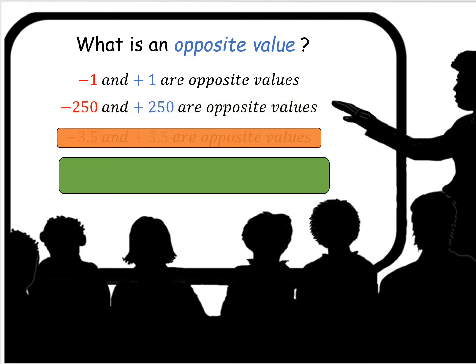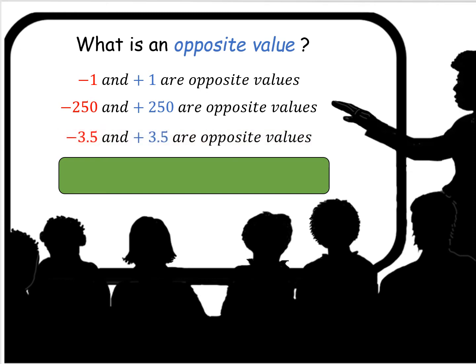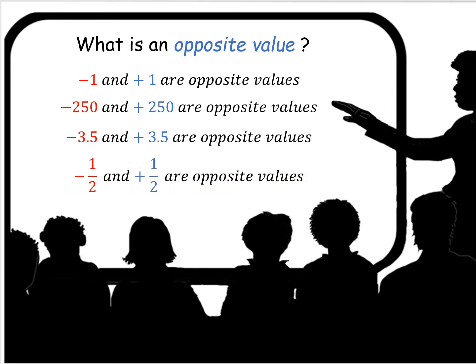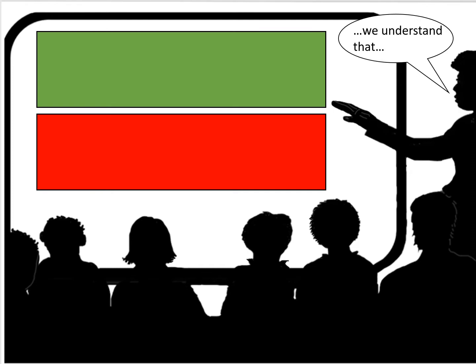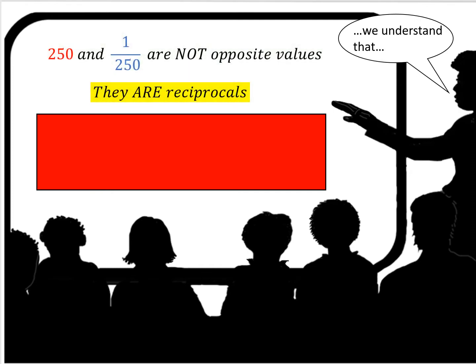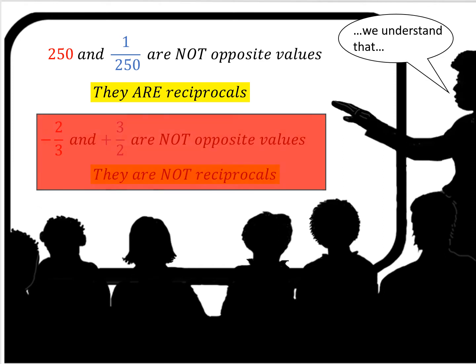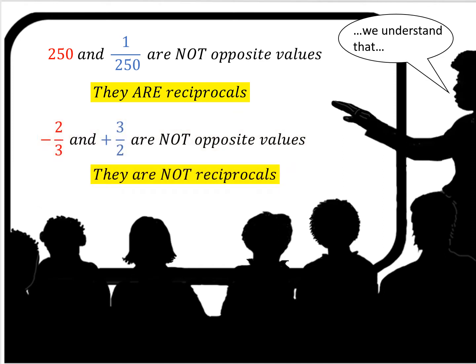Minus one and plus one. Minus 250 and plus 250. Negative 3.5 and positive 3.5. Negative one half and positive one half. Each of those pairs are opposite values. Now, just so that we understand, 250 and 1 over 250 are not opposite values — those are reciprocals.